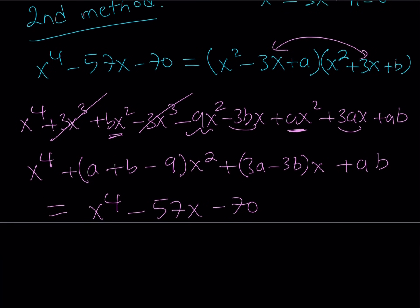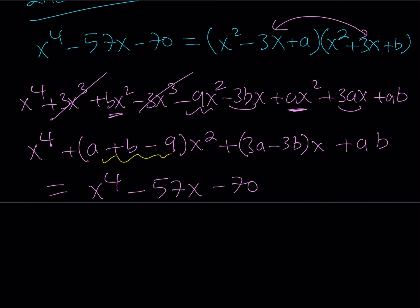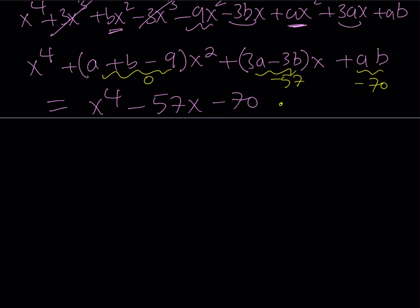So again, we have something similar like the equality of two polynomials, which indicates that the coefficient of x² is 0 because we don't have an x² here on the right-hand side. And the coefficient of x is equal to -57. So I can set that equal to -57. And the constant term is -70. Even though I don't need it, I'll just use it to verify my answer. So from the first one, the coefficient of x², I get a + b = 9. From the coefficient of x, I get a - b. If I divide both sides by 3, I get a - b = -19. And this is good enough for me to find a and b.